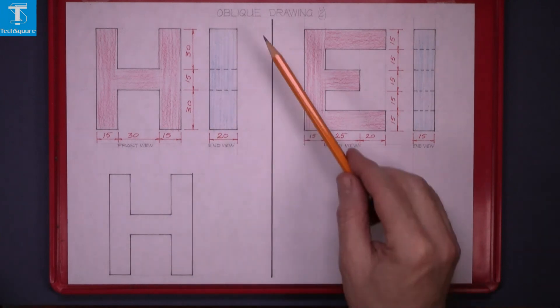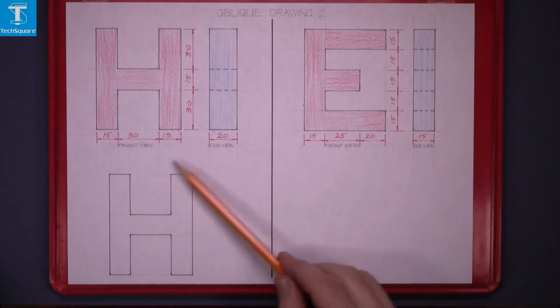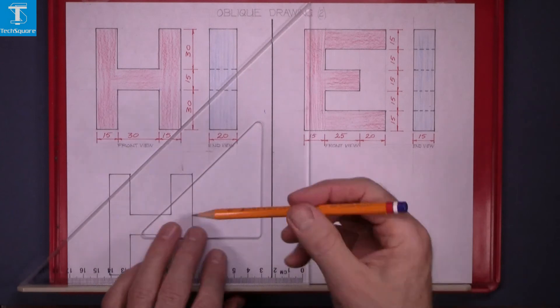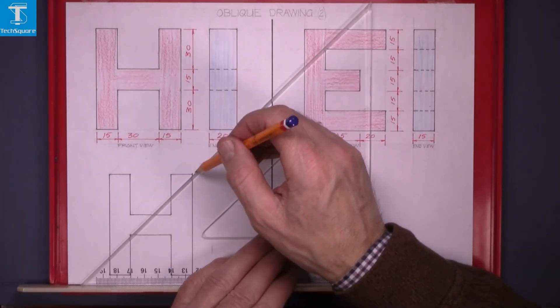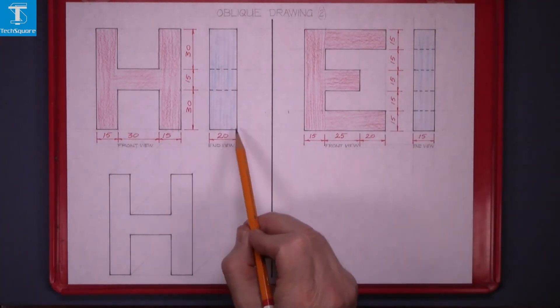To project this in oblique we're going to use the 45 degree set square. Draw back from all points at 45 degrees.